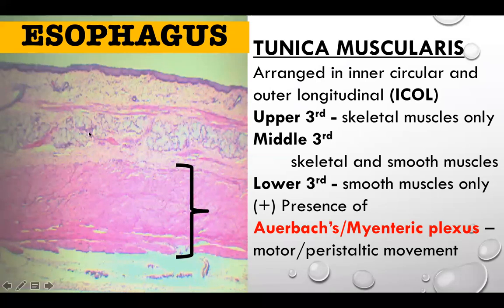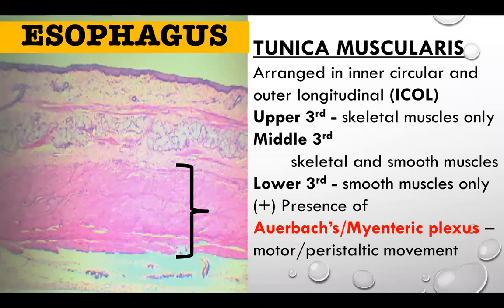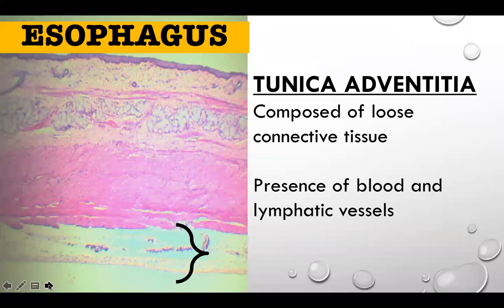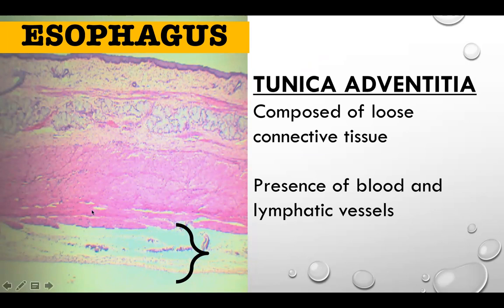As a review: in the submucosa, the plexus is for lubrication or mucosecretion — that is Meissner's plexus. In the tunica muscularis, the myenteric or Auerbach's plexus is present all throughout the GI tract. The last layer is the tunica adventitia, composed of loose connective tissue with blood vessels and lymphatic vessels. If it is adventitia it is adherent to the organ; if serosa, it is freely located in the peritoneal cavity.